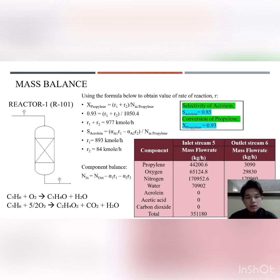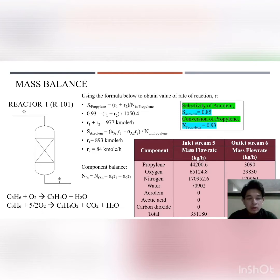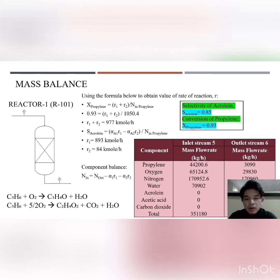For the molar flow mass balance in Reactor 1, two chemical equations are involved. To find the rate of reaction for both equations, we use the selectivity of acrolein and the conversion of propylene — conversion is 0.93 and selectivity is 0.85. Using both the conversion and selectivity formulas, we find R1 and R2 for the reactor. Then using the component balance formula N_in = N_out − α₁R₁ − α₂R₂, we find the inlet and outlet molar flows. The total inlet flow equals the total outlet flow, so the mass balance for this reactor is balanced.